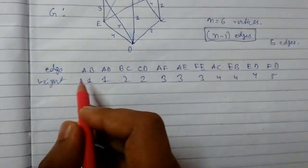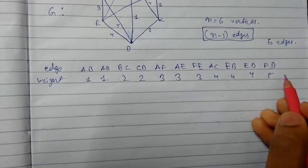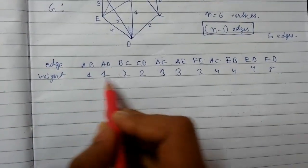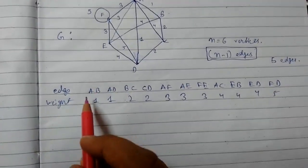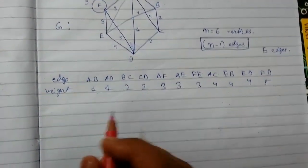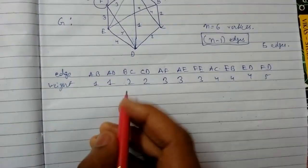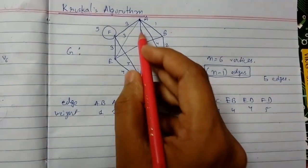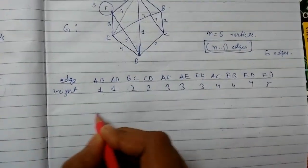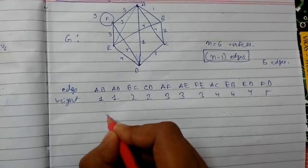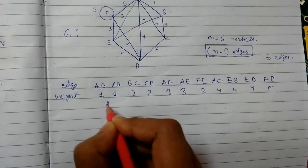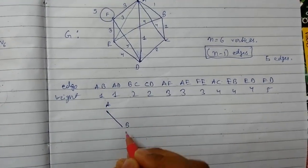Here all the edges are arranged in increasing order of their weights. We will include all edges except parallel edges and self-loops. Now we will select the smallest edge AB. So AB is like this.